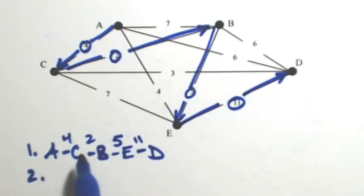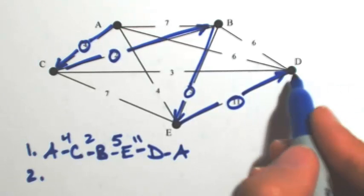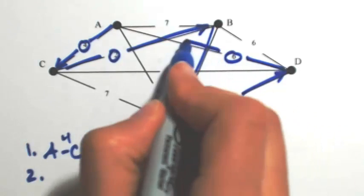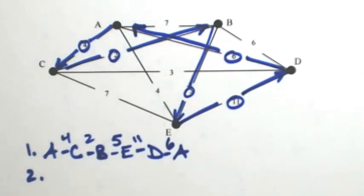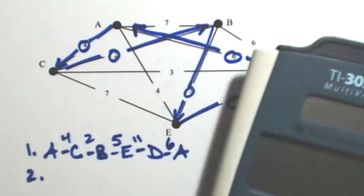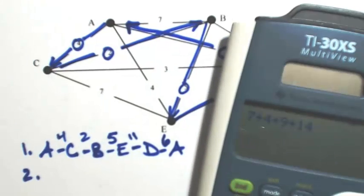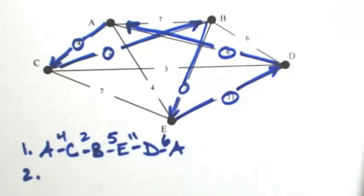We've now hit all vertices: A, B, C, D, and E. So we go back home to A. Adding up all the costs: 4 plus 2 plus 5 plus 11 plus 6 gives us 28. That's the total for the first possibility.